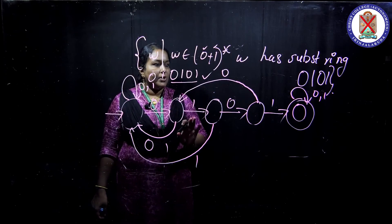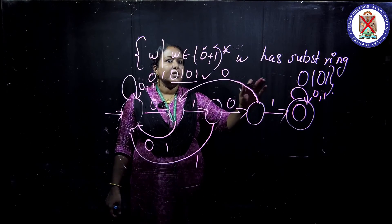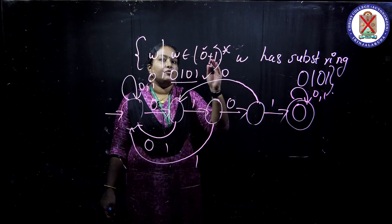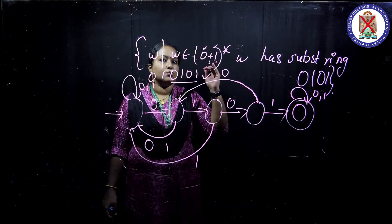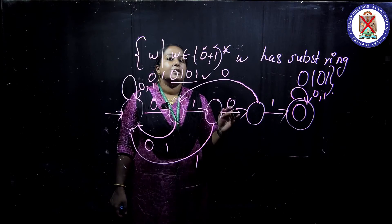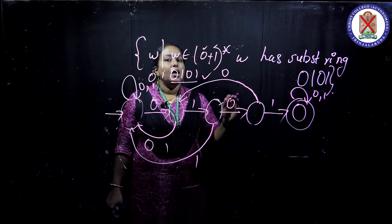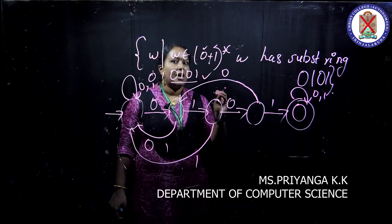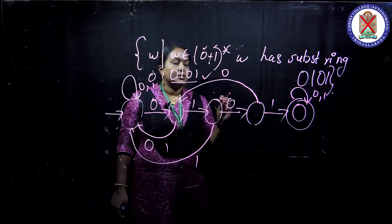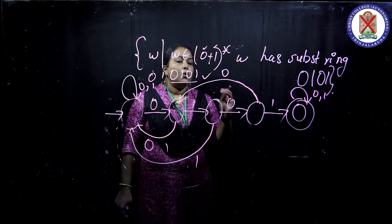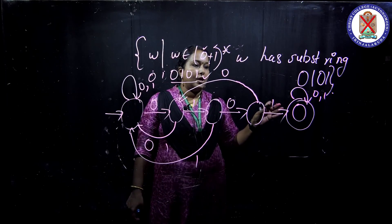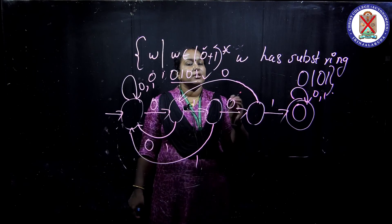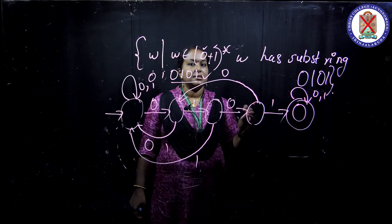Understand it thoroughly. This is about the substring. Till now we have covered three concepts of DFA drawing: first, ends with a string; second, begins with a string; and also substring. You will be able to master it very clearly when you follow these tricks and draw it clearly. Then you will gain knowledge of how to draw a DFA in a very easy manner. Thank you, keep on practicing. Thank you.